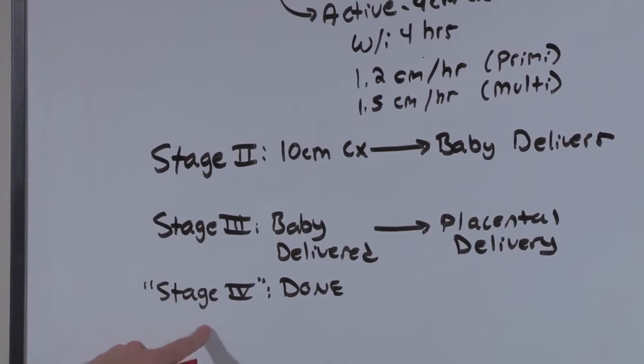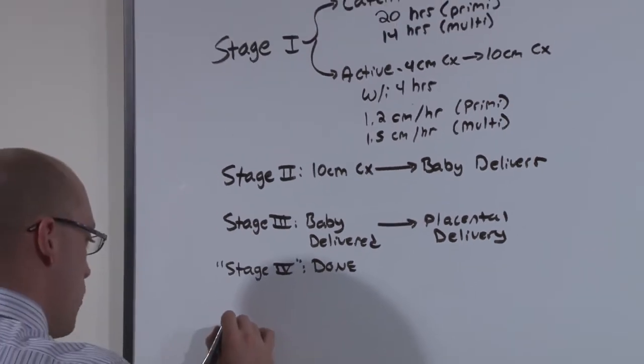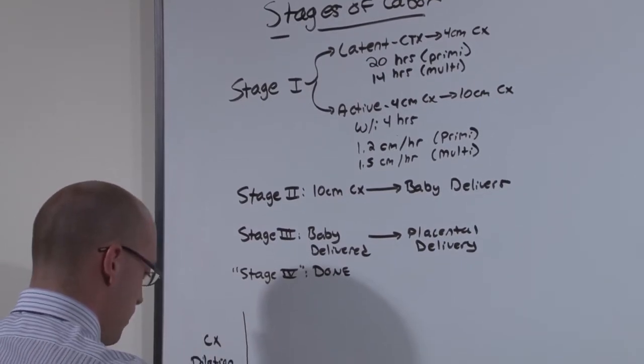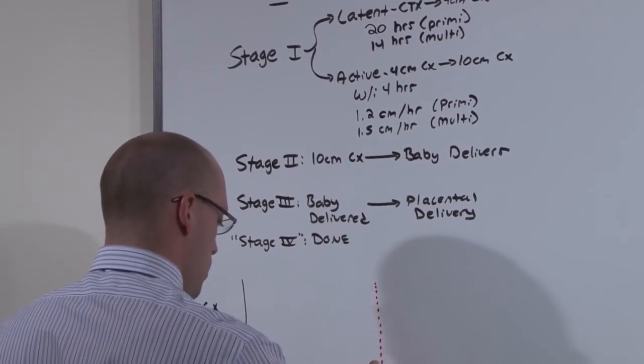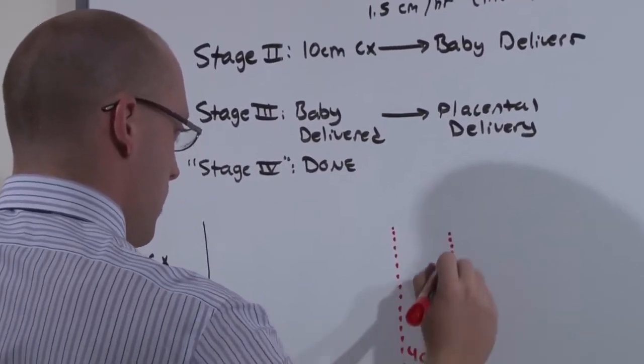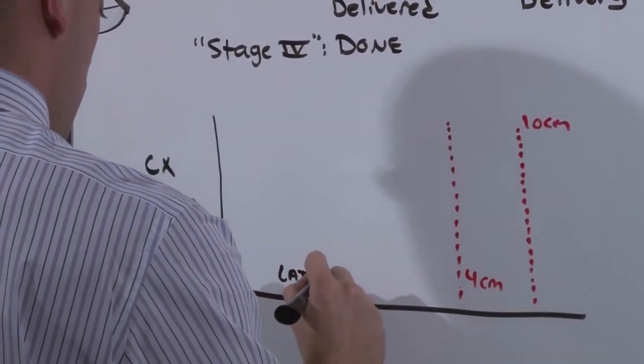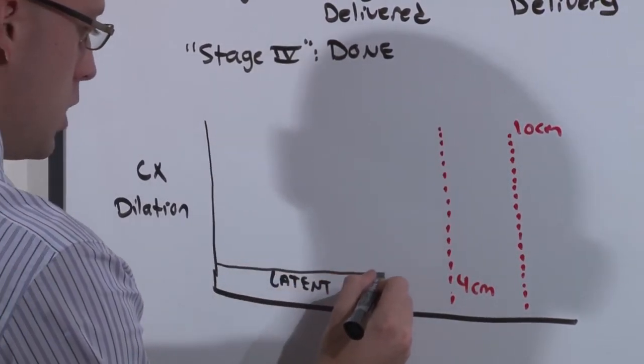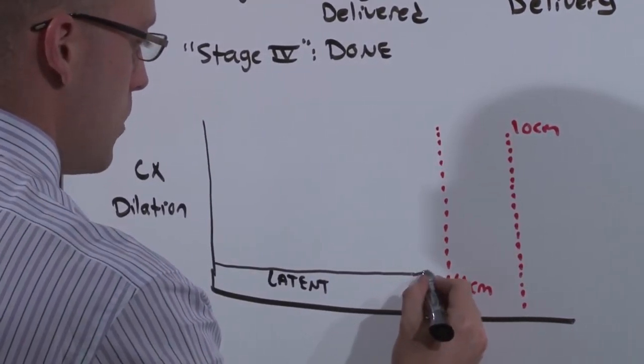But I want to explore a little bit more stage 1 because it's very important to understand what's happening. This graph will represent cervical dilation over time, the key moments being 4 centimeters and 10 centimeters. The latent phase will experience a long period of time where there are contractions, but there's no change in the cervix. Towards the very end of the latent phase, cervical change will begin to happen slowly.